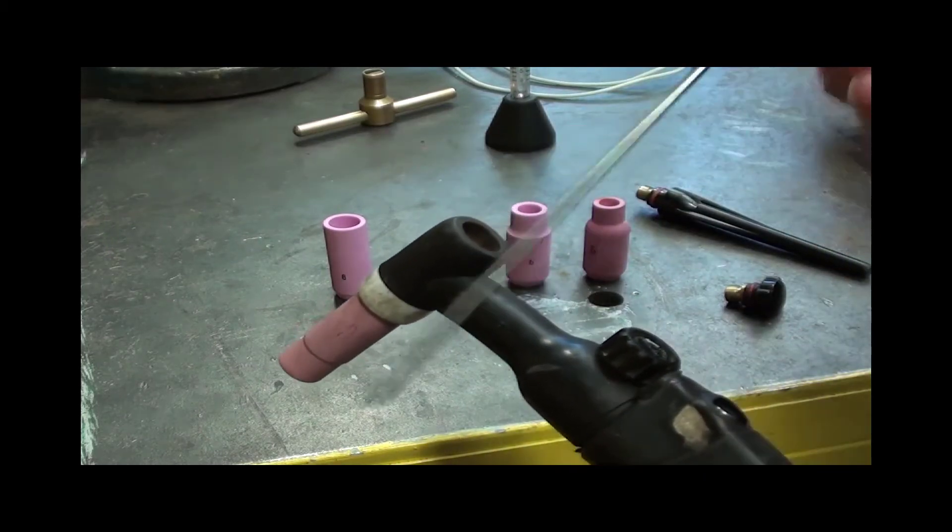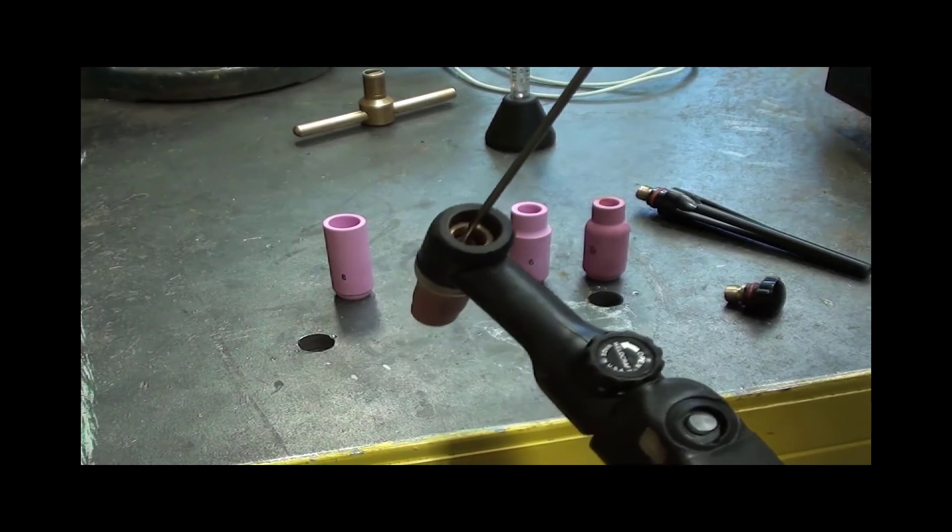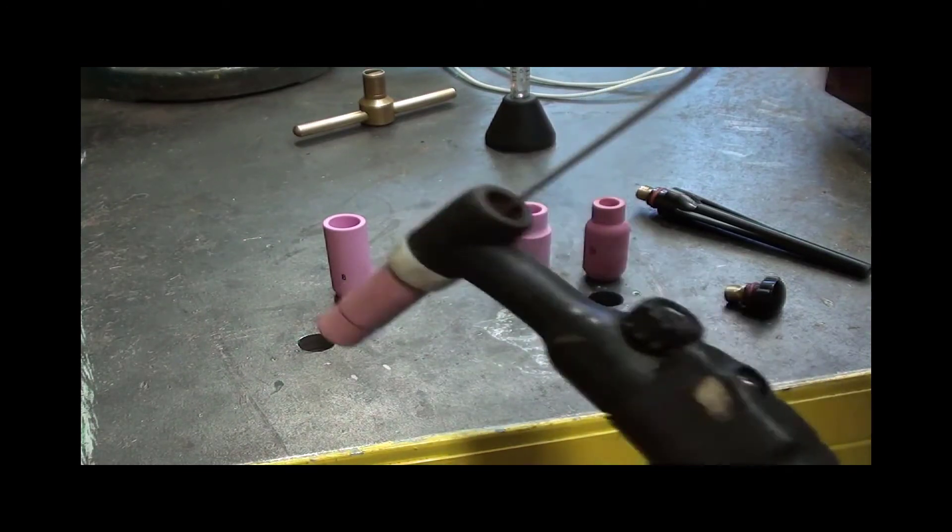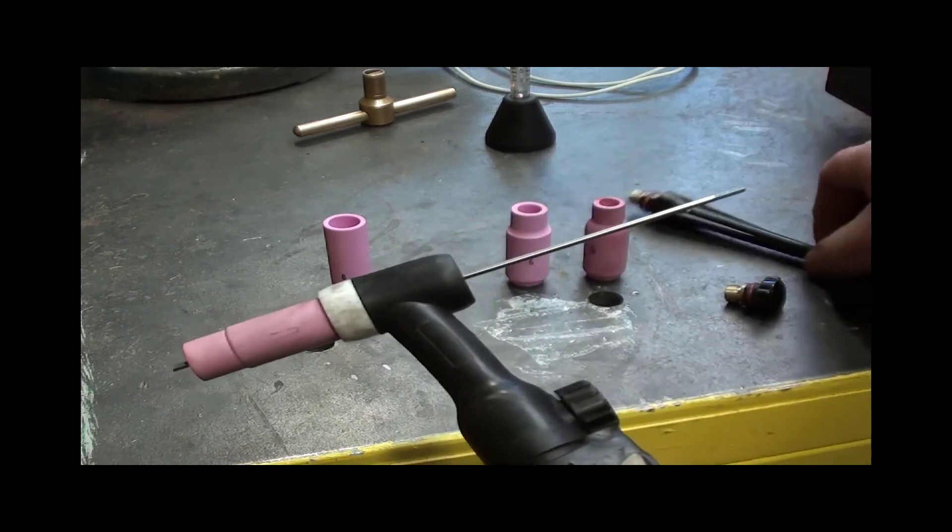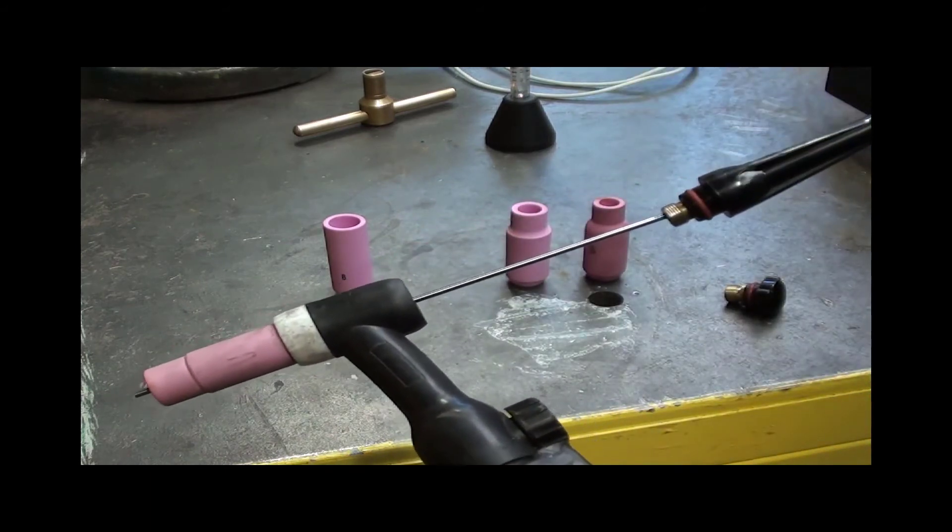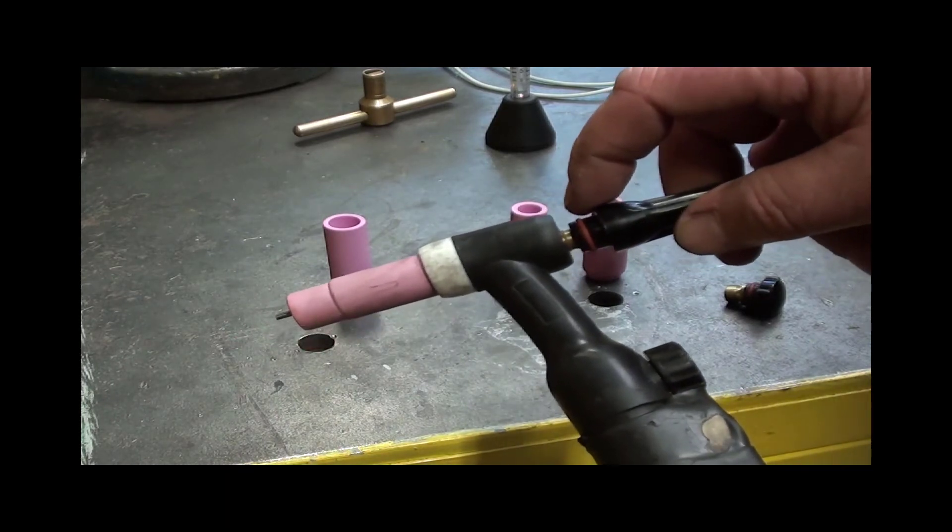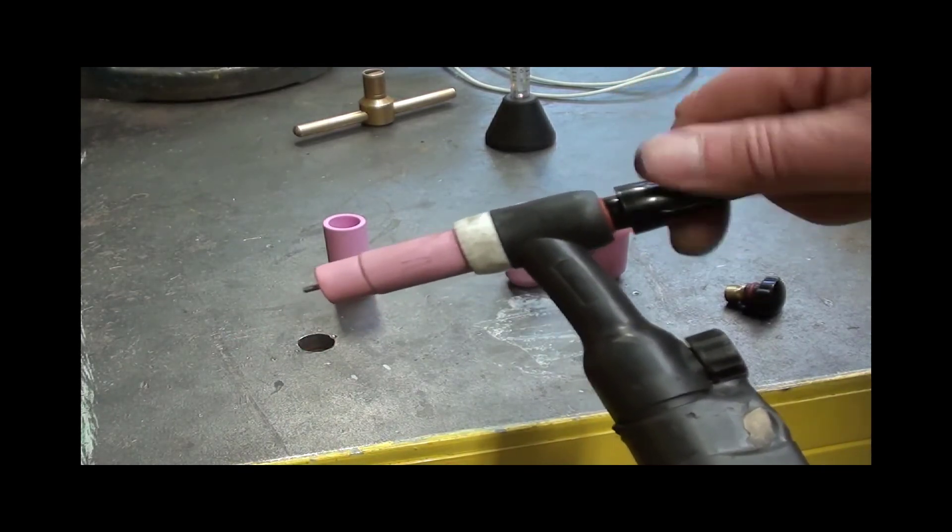Then we can take a tungsten. We feed it down through the actual centre of it. Can't quite see it on the camera, but it just feeds in through the front face. And then we take our back cap and we screw it onto the back. It's got a little, you can see that little red O-ring there. That's just going to screw into there.